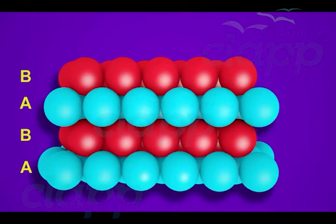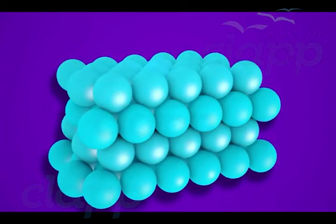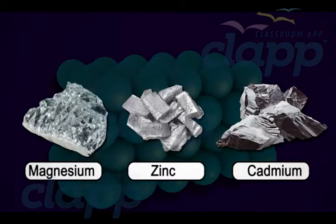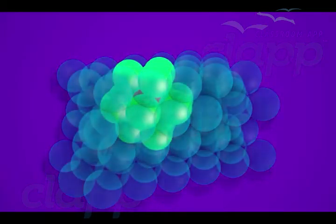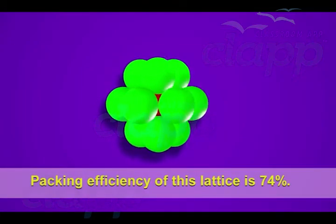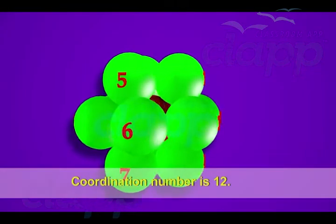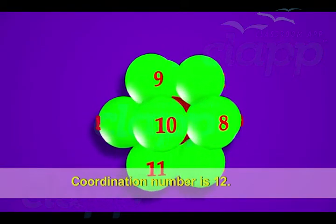This AB AB pattern is called the hexagonal close-packed structure, or HCP. Metals like magnesium, zinc, and cadmium have this type of packing. This packing is very efficient due to very little space between the spheres, giving a packing efficiency of 74%. Each sphere is in contact with 12 nearest atoms, so the coordination number is 12.